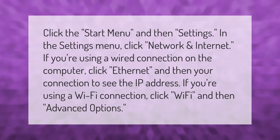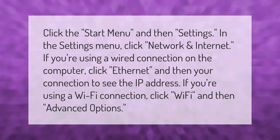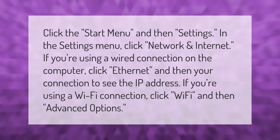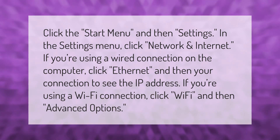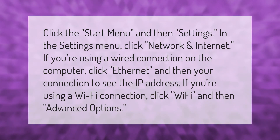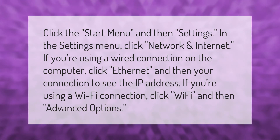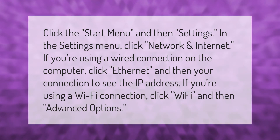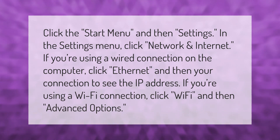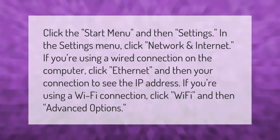Click the Start menu and then Settings. In the Settings menu, click Network and Internet. If you're using a wired connection, click Ethernet and then your connection to see the IP address. If you're using a Wi-Fi connection, click Wi-Fi and then Advanced Options.